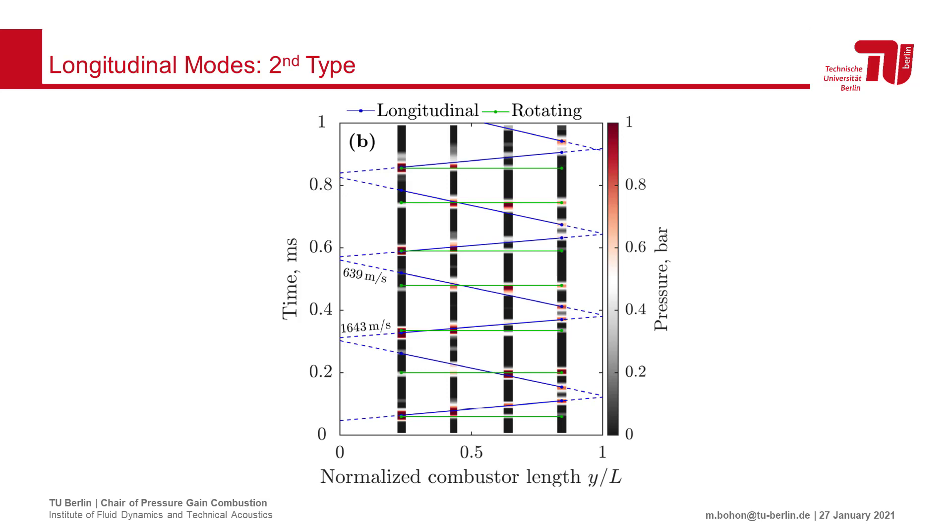When we extend this process to a case with the L2 longitudinal component, the pressure field is a bit less orderly. We can still identify a weak rotating component marked in green.